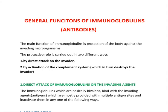Hi everyone. In the immunology topic, we are going to discuss about the general functions of immunoglobulins. We had gone through the structure of antibody or immunoglobulin and the types of immunoglobulins in different parts. Now in this part, we are going to mainly read about the functions of immunoglobulins, including all five types. The main function of any immunoglobulin is to protect the body against invading microorganisms, that is pathogens, and this protective role is carried out in two different ways.